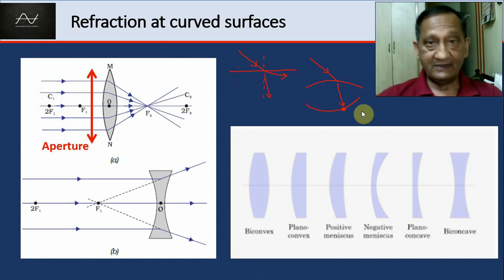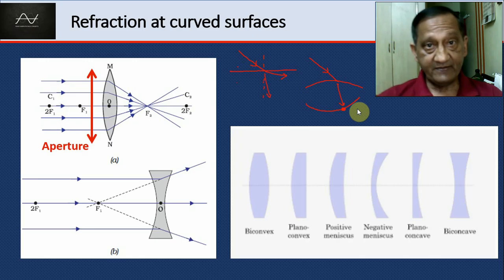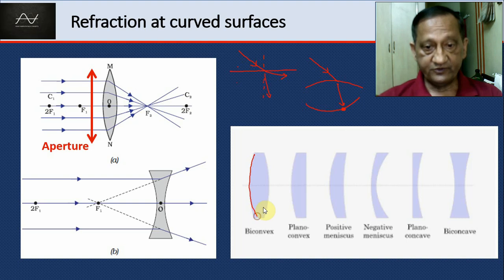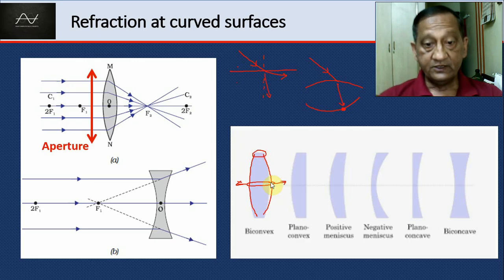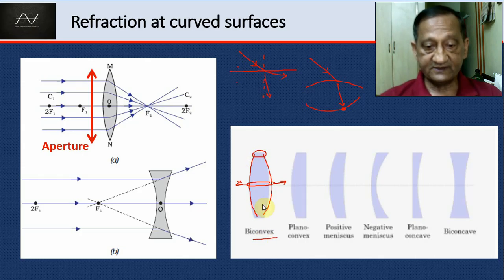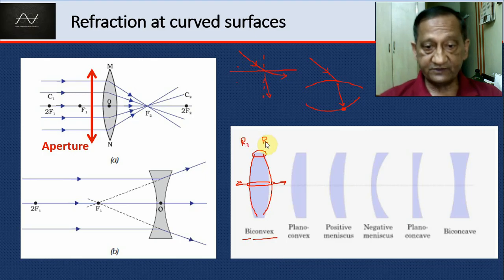We are going to talk about lenses which have got two surfaces. Both surfaces may be curved or may not be curved, but there are two surfaces. Here, one surface is curved and another surface is also curved, bulging outwards, so the centre is thicker than the ends. Such a lens is called a convex lens, and because there are two curved surfaces, we call it a biconvex lens. The radii of curvature of these two surfaces may or may not be the same.